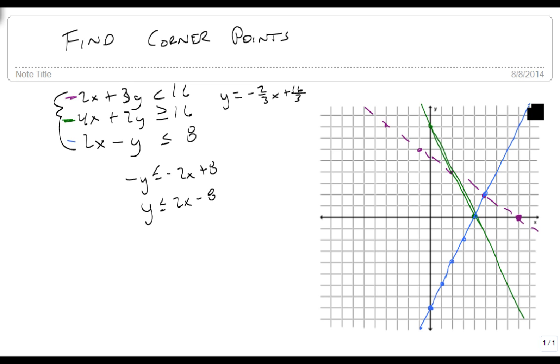And we need to figure out where we're going to shade. So if we plug in 0, 0, 0 is less than 16, so he's shading this way, so that rules out this region, this region, and this region.